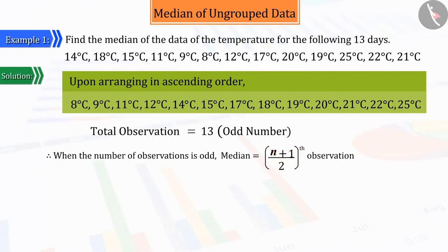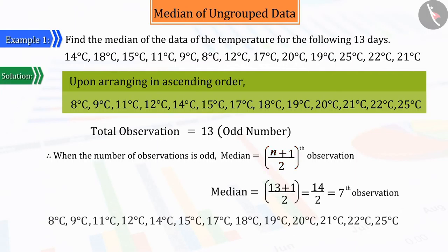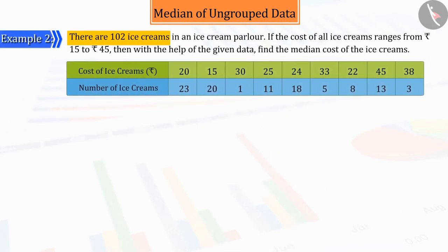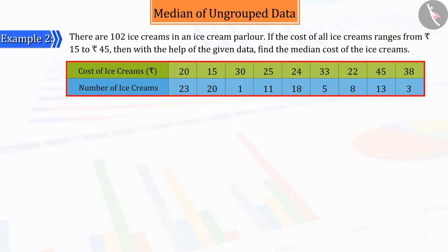Let us now discuss this in detail. There are 102 ice creams in an ice cream parlor. If the price of ice creams ranges from Rs. 15 to Rs. 45, then with the help of the given data, find the median cost of the ice creams.